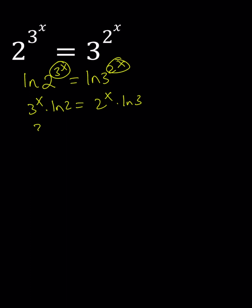Let's go ahead and put the 3 to the x and 2 to the x together. Now we can go ahead and write this as 3 over 2 to the power x equals ln 3 over ln 2.